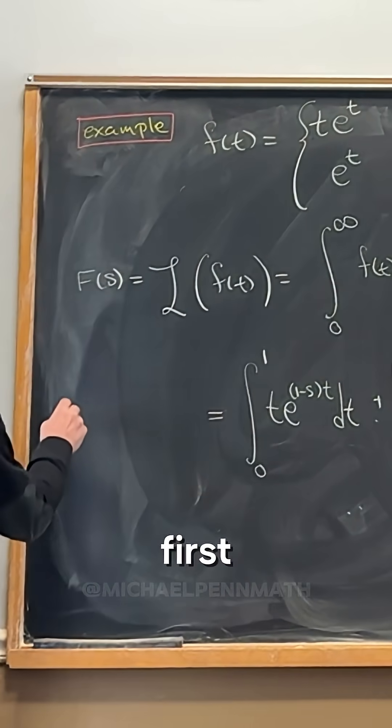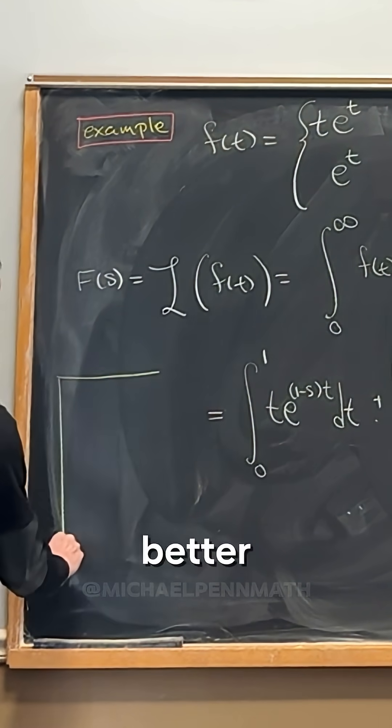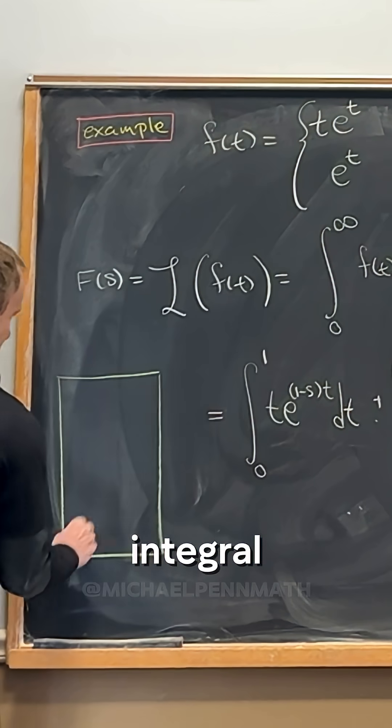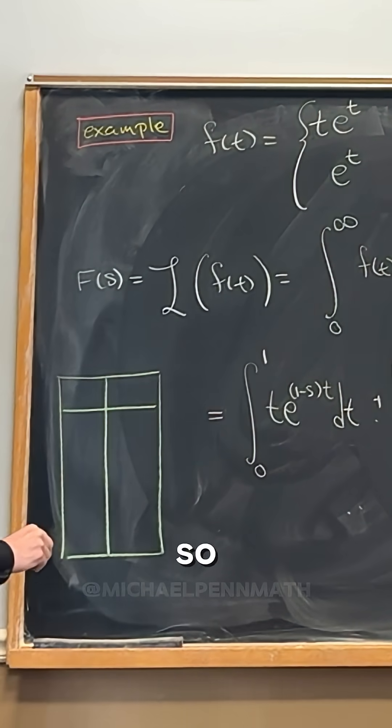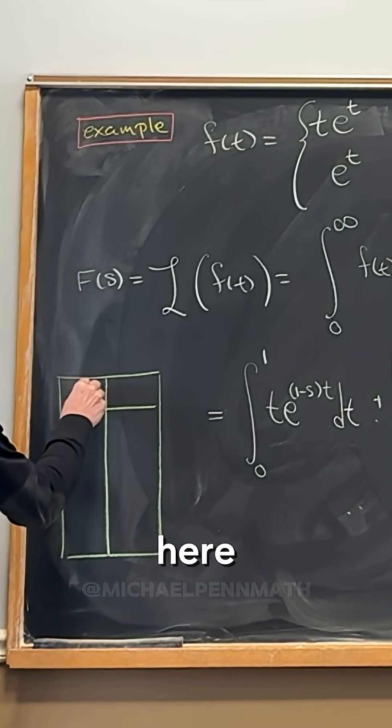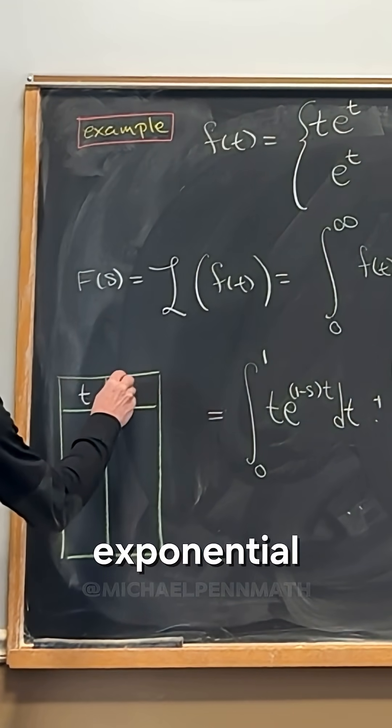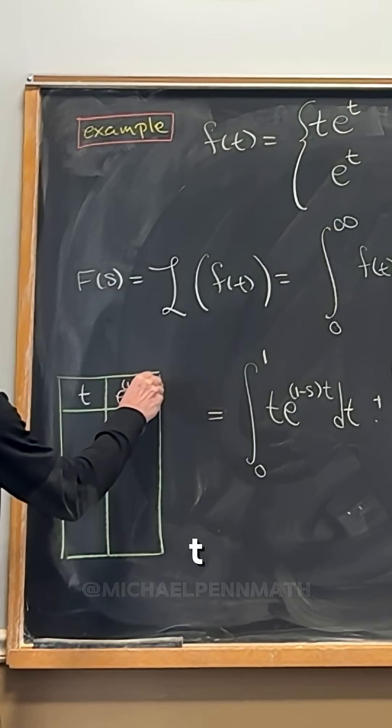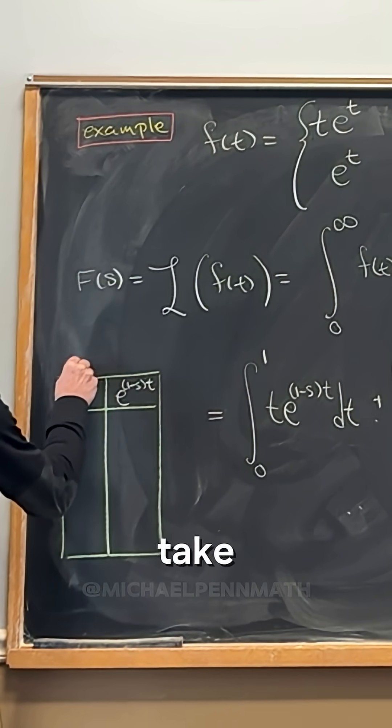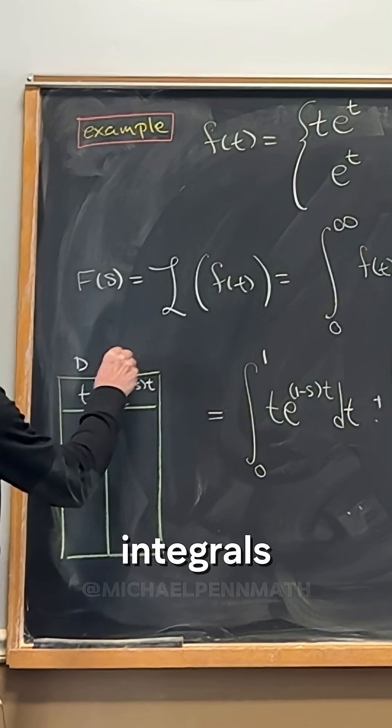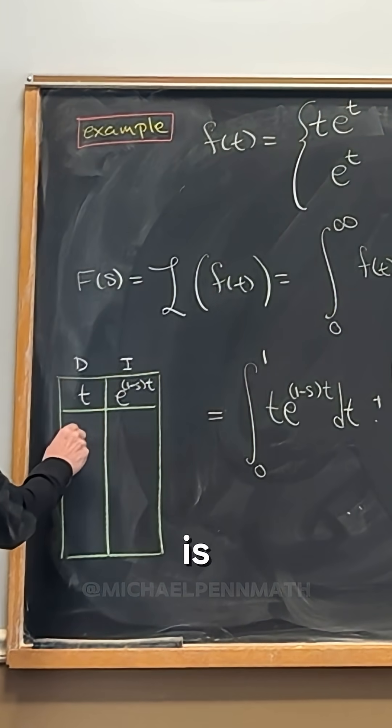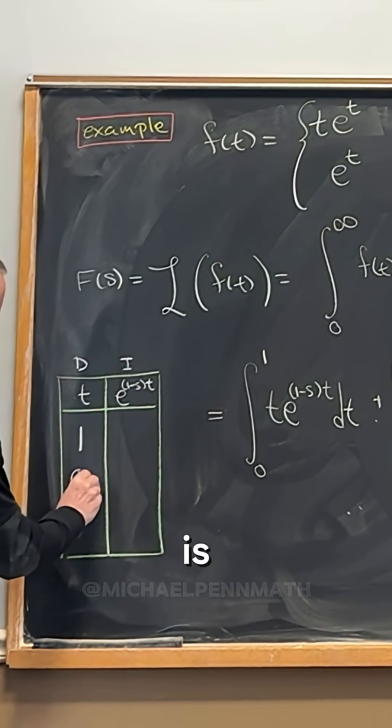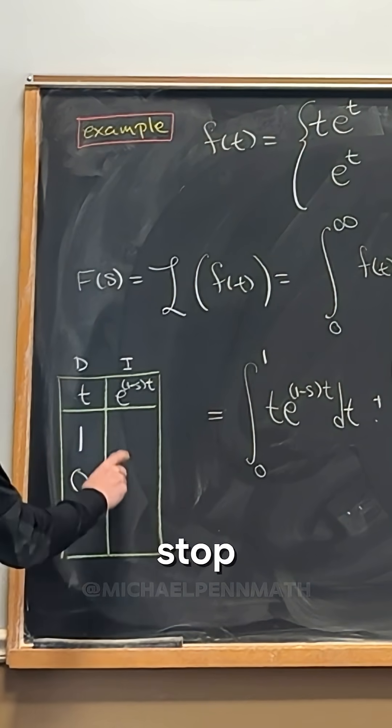We could use integration by parts using the table method. Put the polynomial t here and the exponential e^((1-s)t) here. Take derivatives down this column and integrals down this column. The derivative of t is 1, derivative of 1 is 0, so we can stop.